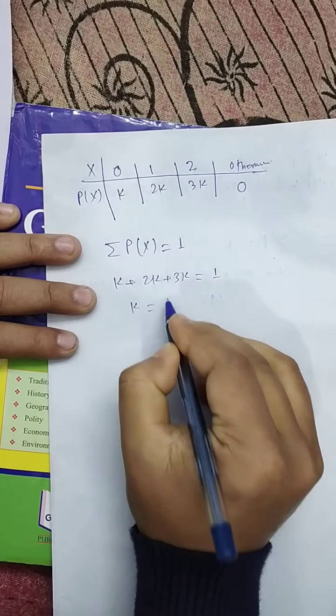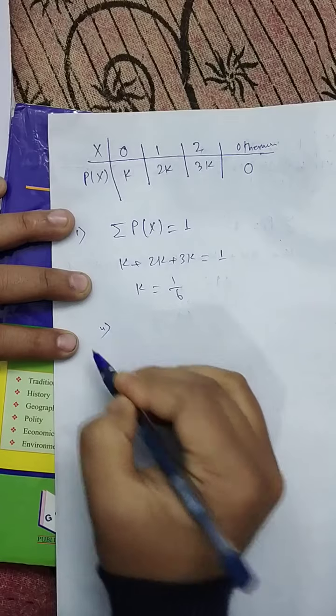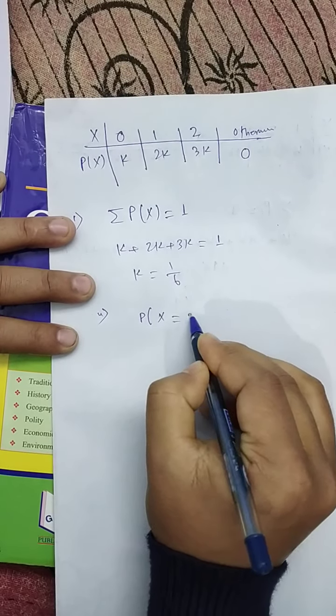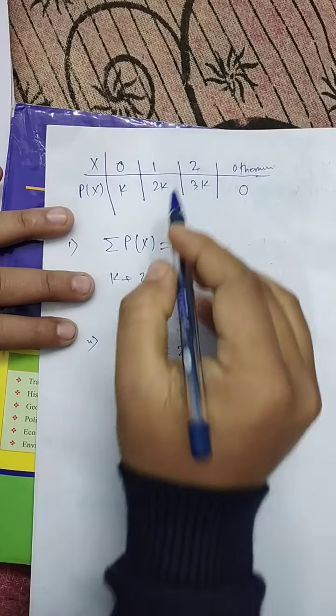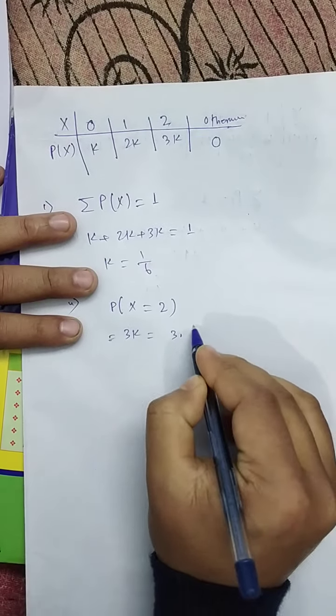So K = 1/6. For part 2, P(X = 2) = 3K, so K is replaced by 1/6, giving the answer 1/2.